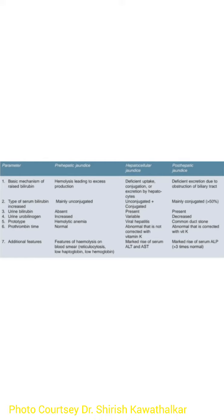Regarding urine bilirubin, we don't find it in pre-hepatic jaundice, but it is present in hepatocellular and post-hepatic. Prothrombin time is normal in pre-hepatic, but is abnormal in hepatocellular and post-hepatic.